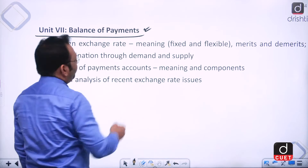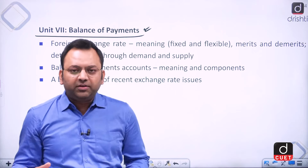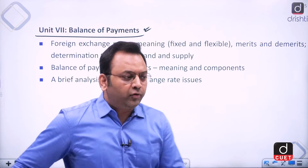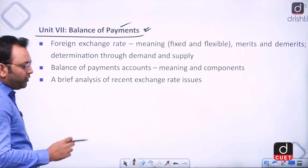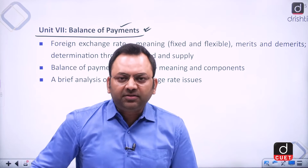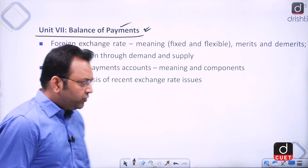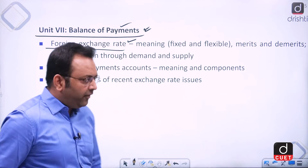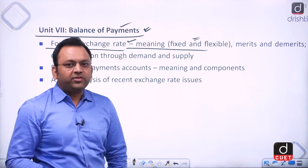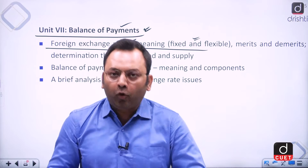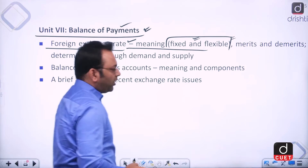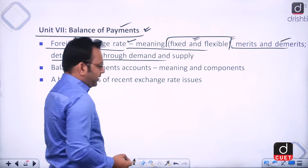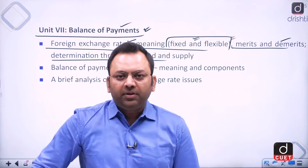Unit seven is about the balance of payments (BOP). A country has various economic transactions with the outside world, and a systematic record of those transactions is the BOP. When transacting with foreign countries, we use internationally accepted currencies, hence we study the concept of foreign exchange rates — fixed, managed, and floating — and how they are determined by demand and supply.